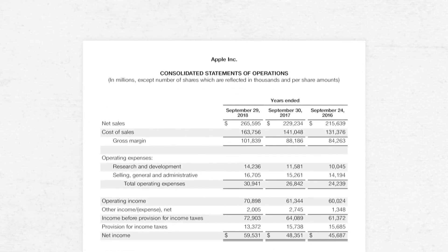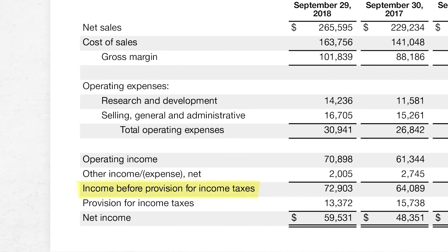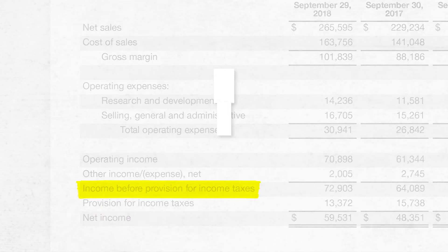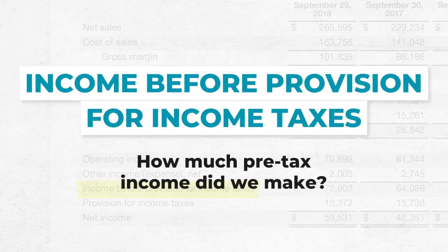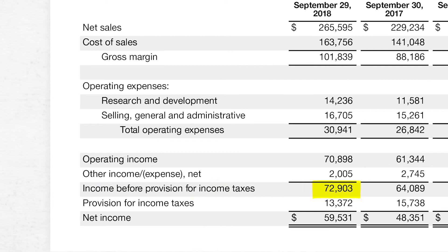The next line is income before provision for income taxes. That just means how much pre-tax income did we make? Apple made $72,902,000,000.